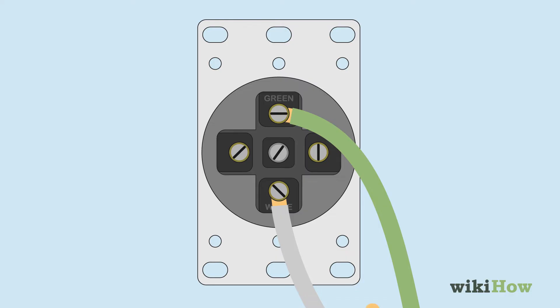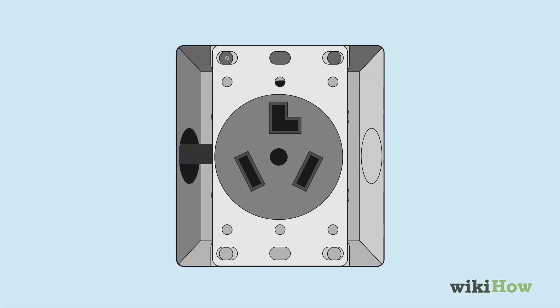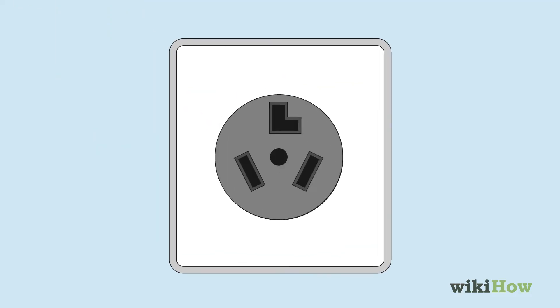Secure the black and red wires into the two unlabeled slots. Push the wires and outlet into the outlet box and secure them in place with screws. Then screw on the outlet faceplate.